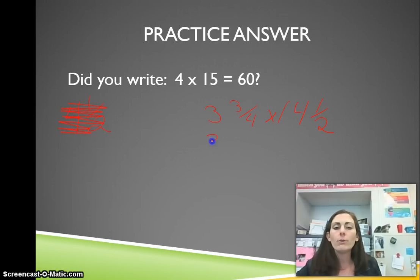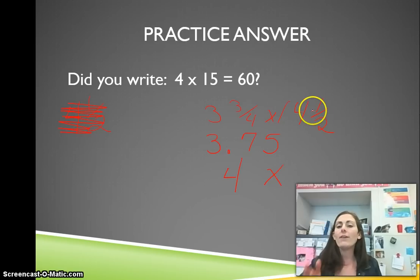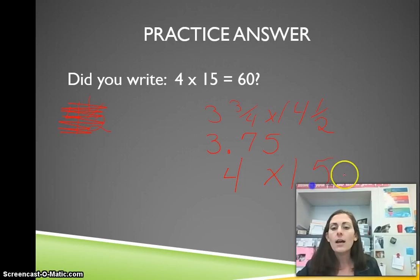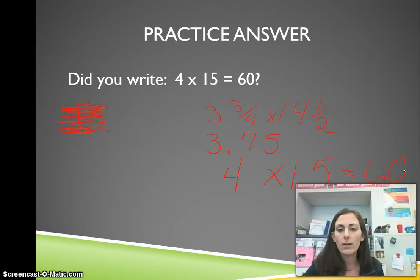Times 14 and 1 half. Remember, when you have a half, you always want to round it up to the nearest whole. So that would be 15. And 4 times 15 equals 60. Hopefully this is all becoming super easy for you right now.